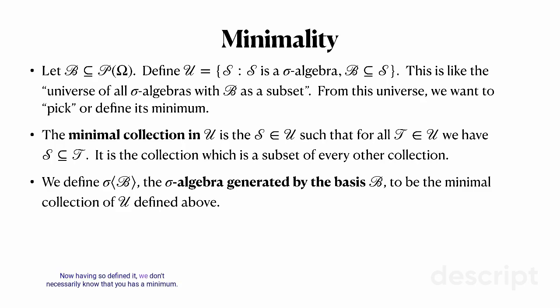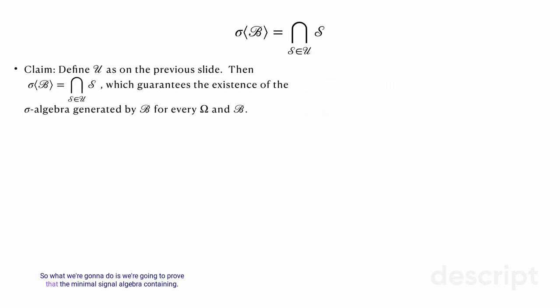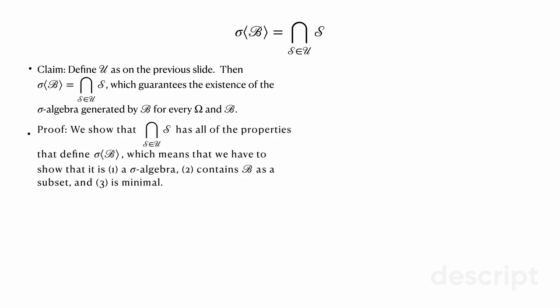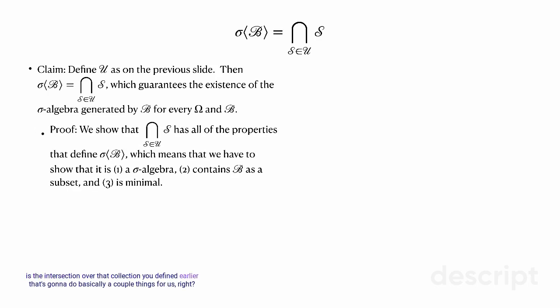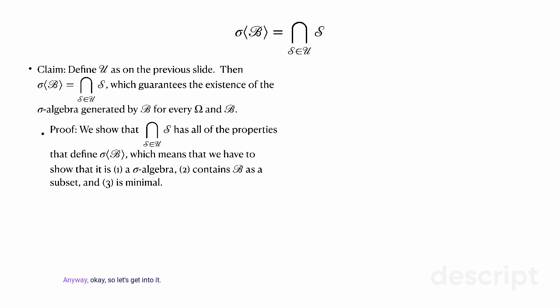Having defined it, we don't necessarily know that U has a minimum. In the next section we'll state and prove a theorem to clear this up. We're going to prove that the minimal sigma algebra containing B is the intersection over the collection U defined earlier. This will establish existence — something satisfying the properties of being the minimal sigma algebra containing B — and also uniqueness, justifying writing this as an equation indicating there is one definite object that the sigma algebra generated by B is.